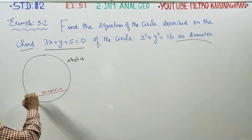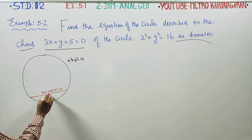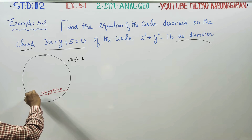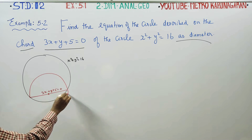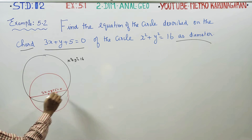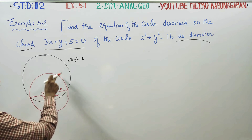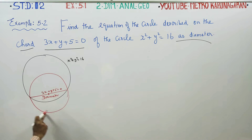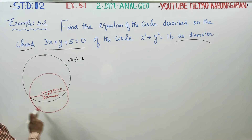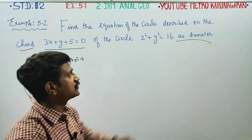The chord acts as the diameter. I am going to draw another circle — the red color circle — whose diameter is this chord. The original black color circle equation is x² + y² = 16, and we need to find the red circle's equation.